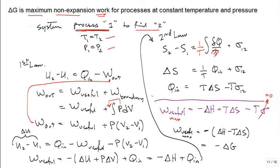The first law: ΔU = Q − W, neglecting changes in macroscopic potential and kinetic energy. The work term will include useful boundary work. If it's constant pressure boundary work, ∫P dV is just P·ΔV. Sticking it in, the useful work is the amount of heat transferred in during the process minus the change in enthalpy. Now we're done with the first law — set it aside and go to the second law.